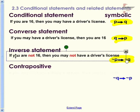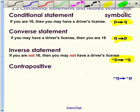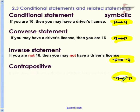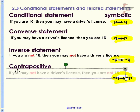license. The contrapositive is the 'nots' again with the Q first: if not Q then not P. If it is not legal for you to have a driver's license, then you are not at least 16 years old. So that's an example of the conditional, the converse, the inverse, and the contrapositive.